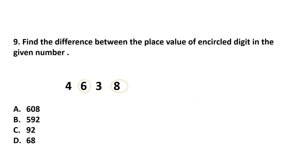Question number 9. Find the difference between the place values of the underlined digits in the given number 4638. The place value of 6 in 4638 is 600, and the place value of 8 is 8, because it is at the ones place. So we find the difference: 600 minus 8 is 592. Answer is option B.